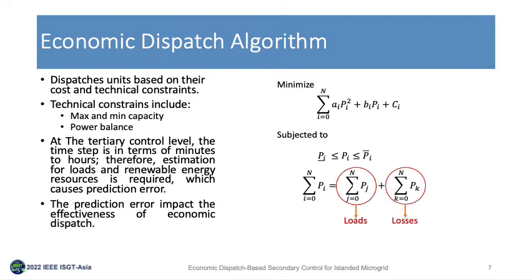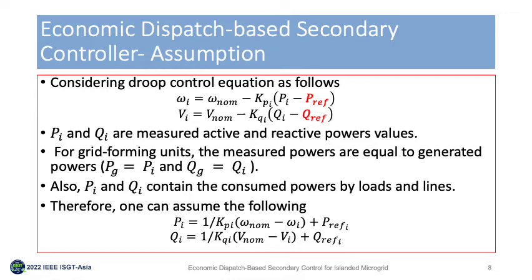Estimation algorithms may cause prediction errors that affect the optimality of the economic dispatch algorithm. In the proposed controller, we omit the secondary control correction terms from the droop control equations, and the secondary control functionalities are provided by reference active and reactive powers as shown in the proposed equations. In grid-forming units, the major active and reactive powers need to be supplied by the unit to maintain frequency and voltage control stability.